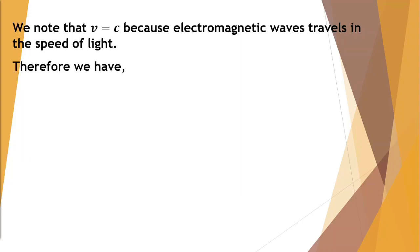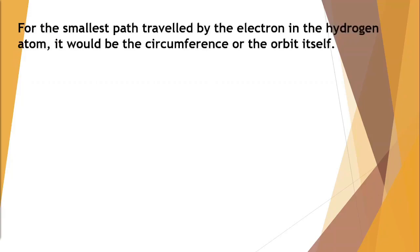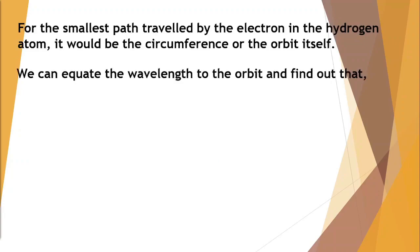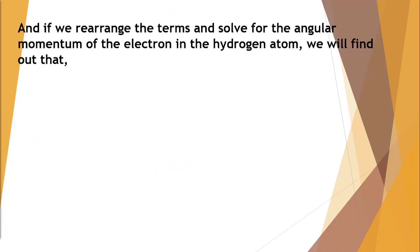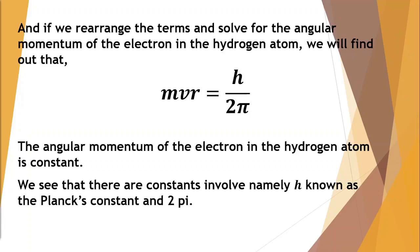Therefore we have p = h/λ, and the wavelength is related to the momentum using the formula h/p or h/(m*v). We can apply this to the electron. The smallest path traveled by the electron in the hydrogen atom would be the circumference or the orbit itself. We can equate the wavelength to the orbit and find out that the wavelength is equal to 2*π*r. We can now write 2*π*r = h/(m*v), and if we rearrange the terms and solve for the angular momentum of the electron in the hydrogen atom, we will find out that m*v*r = h/(2*π). m*v*r is called as the angular momentum. The angular momentum of the electron in the hydrogen atom is constant because it is equal to the Planck's constant over 2*π.